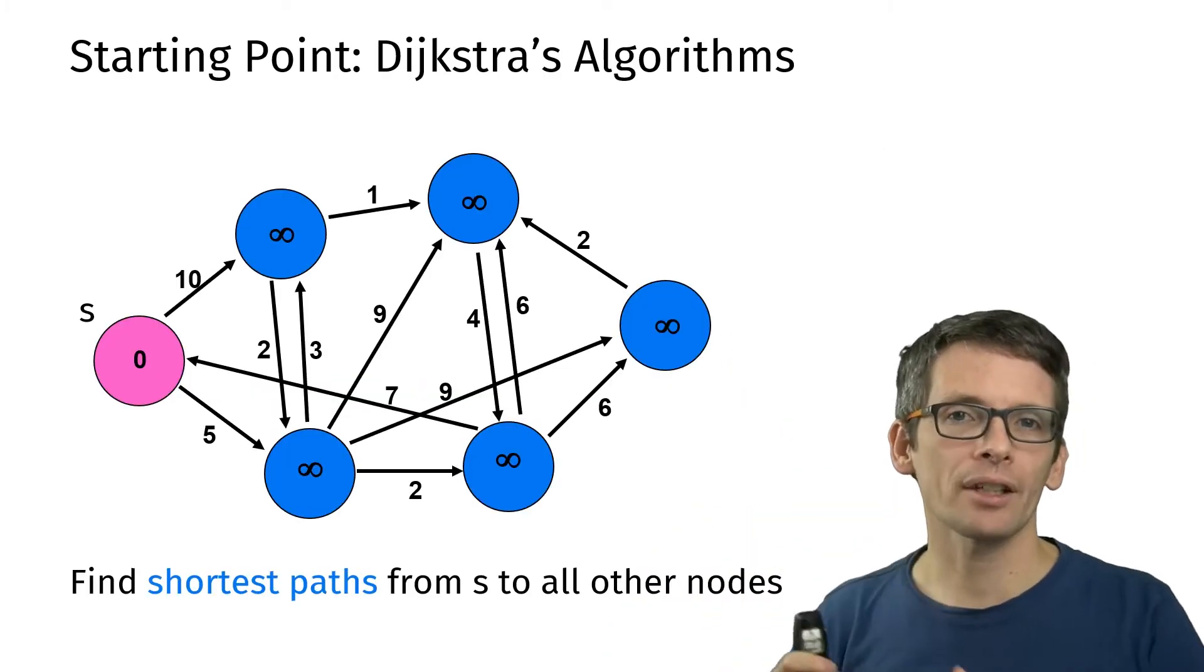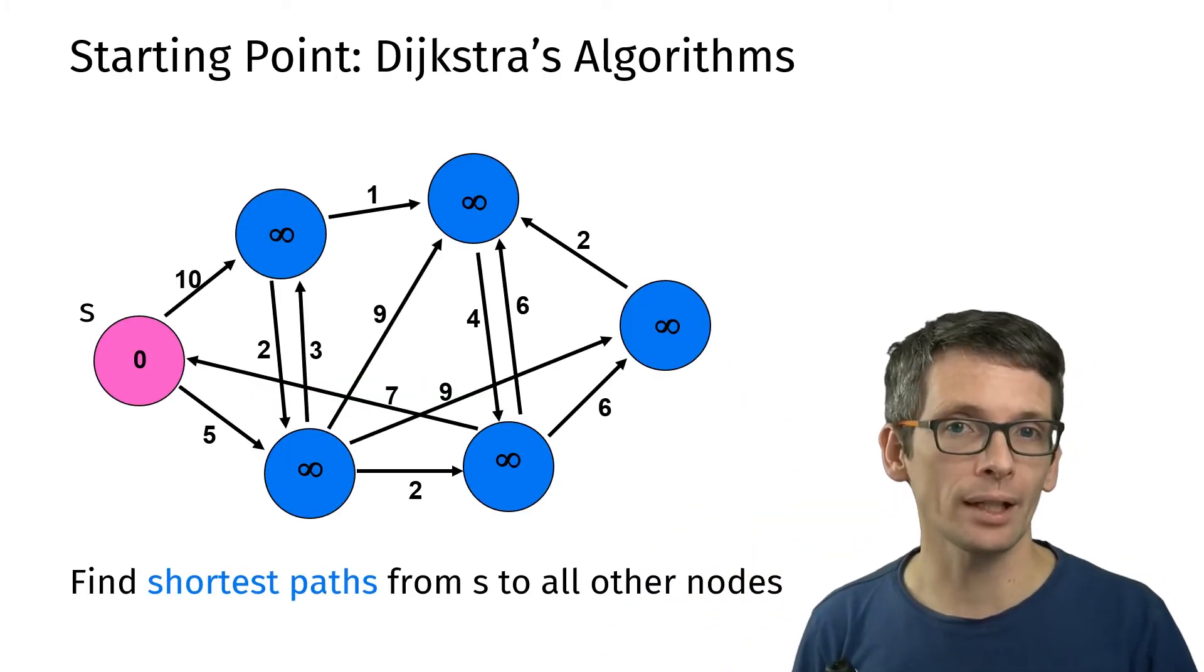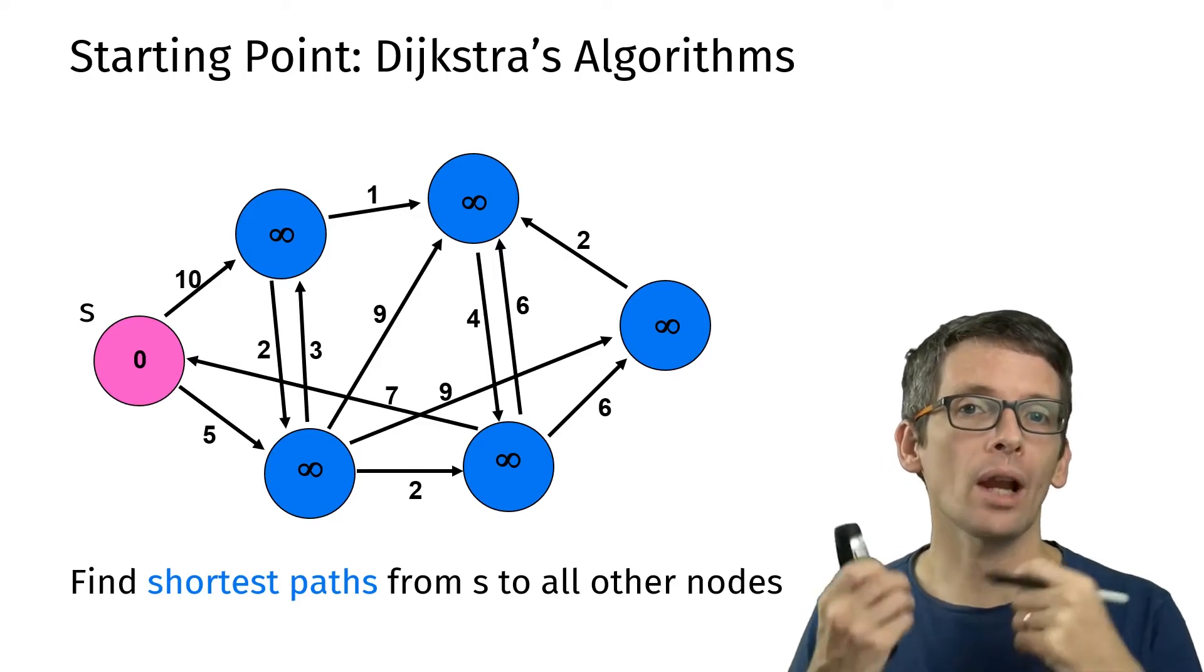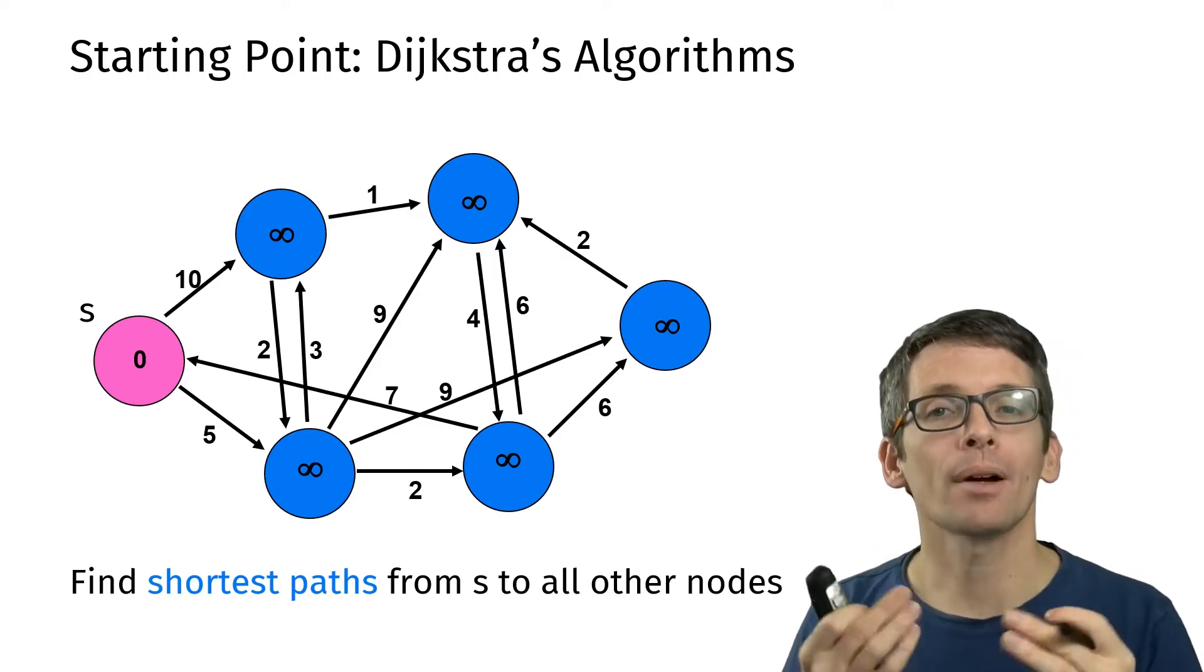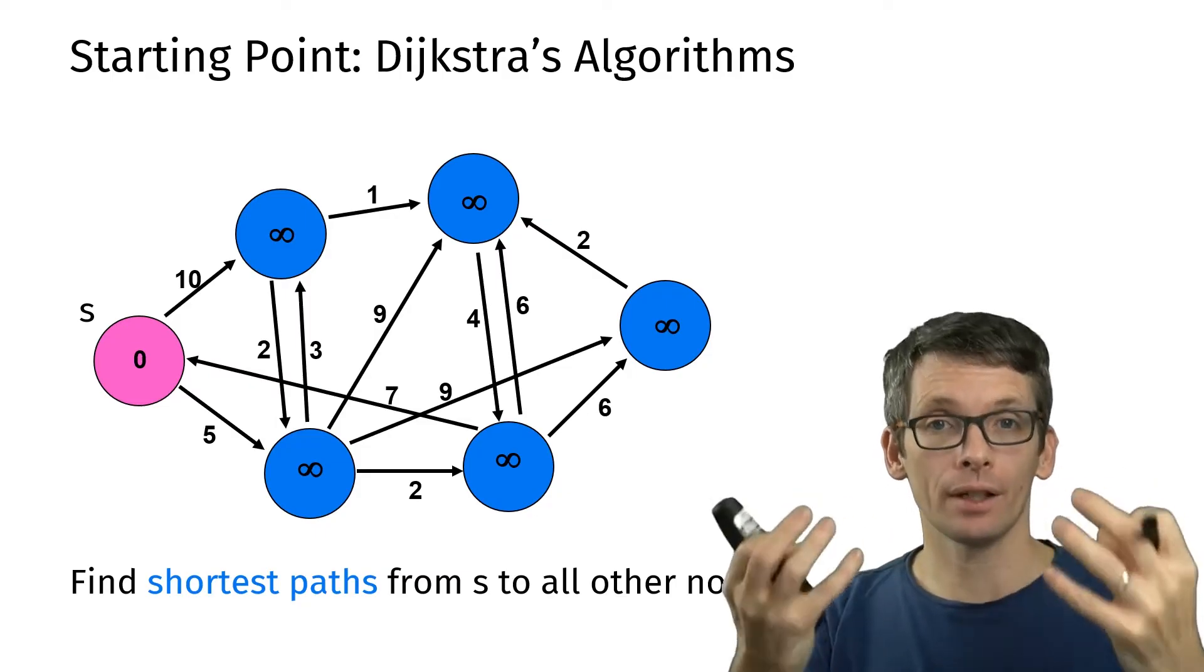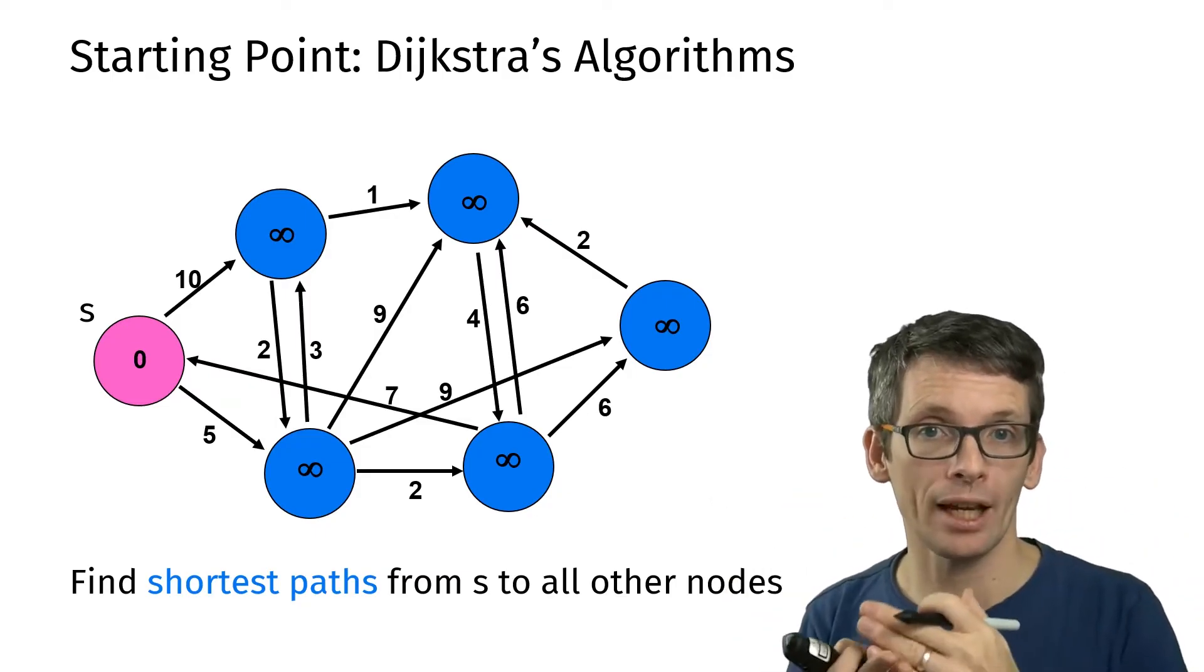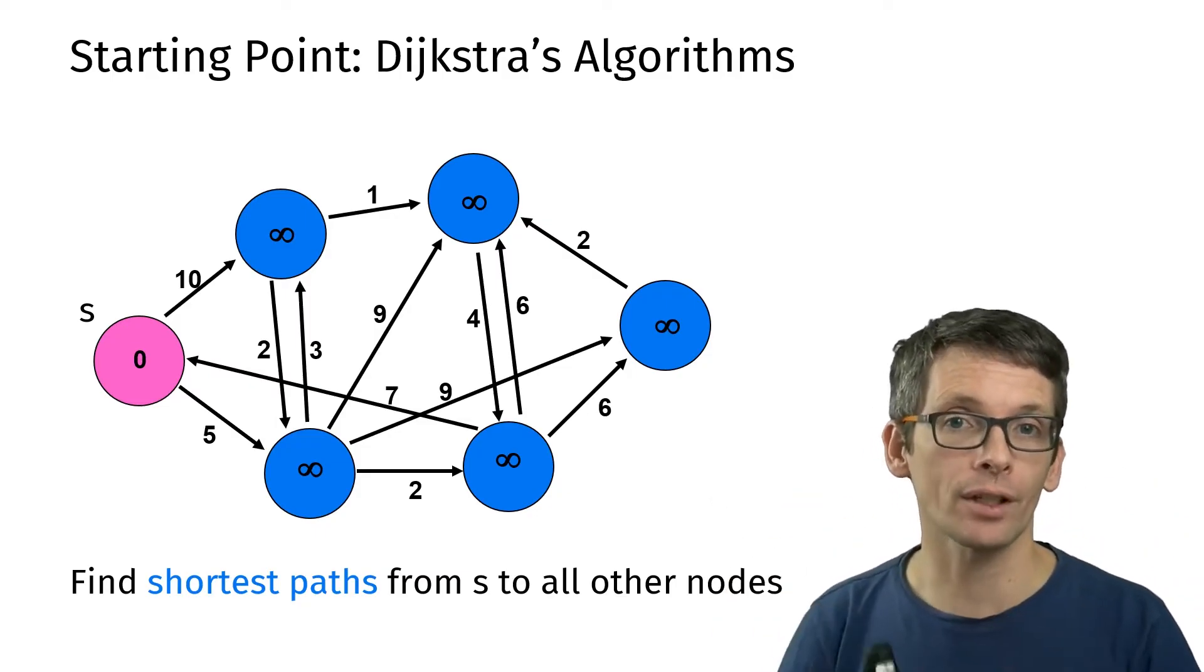Here we have a directed graph with non-negative edge weights and we want to compute the distance from s to all other nodes. We do so by first setting all of the distances to infinity except for s because we can reach s from itself with a distance of 0.